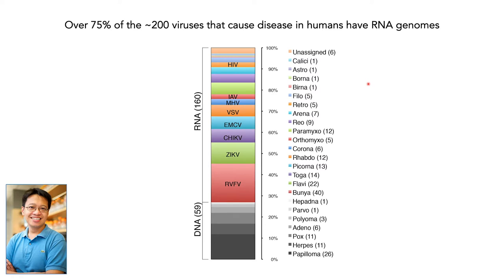Over 75% of the 200 viruses that cause disease in humans contain RNA genomes. As RNA biologists, we like to say that the history of life on this planet is rooted in an RNA world, and it's fair to say that we still live in one. From common viruses like influenza to notorious ones that have dominated the news cycle like Ebola, Zika, and of course COVID-19, there is no question that RNA viruses represent a clear existential threat to our way of life.